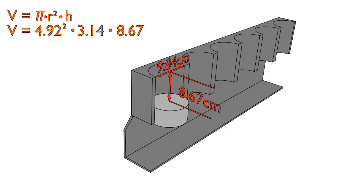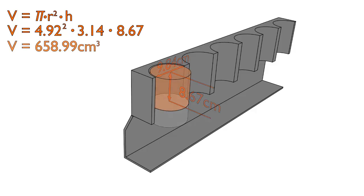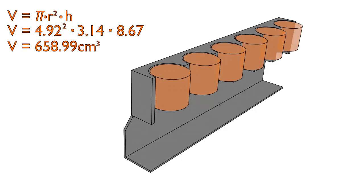Obviously if you wanted a more precise number you would use more decimal places for pi, but this will work for us. When you do that math you find out that one of our cylinders is 658.99 cubic centimeters. Of course we're dealing with an engine that has six cylinders, so we multiply that value by six and get 3.953 liters.